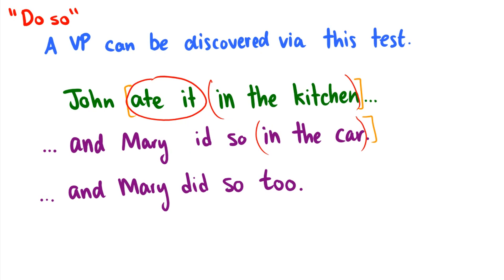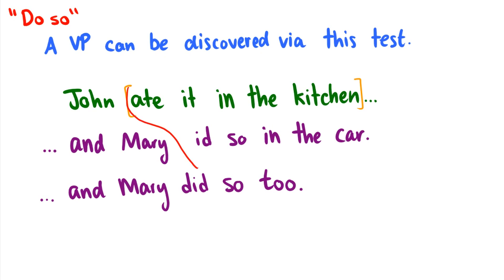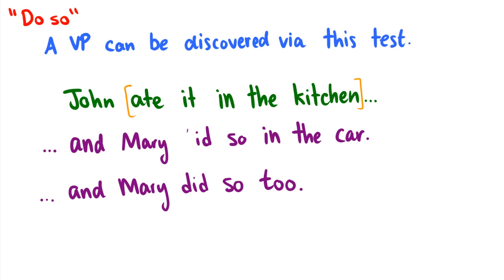In the third case, there's something more interesting going on. When we say 'and Mary did so too,' 'did so too' is actually referring to the entire phrase 'ate it in the kitchen.' So this tells us two things: 'ate it in the kitchen' is a constituent, and so is just 'ate it' — 'eat it' is also a constituent. 'And Mary did so too' gives us the bigger one, and 'and Mary did so' gives us the smaller one.